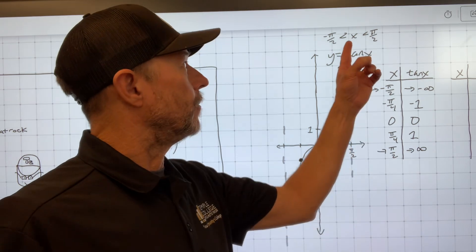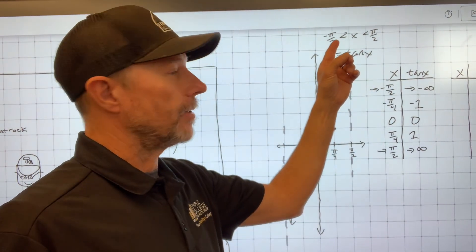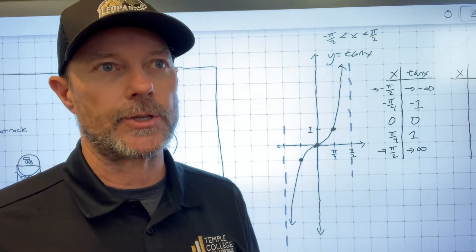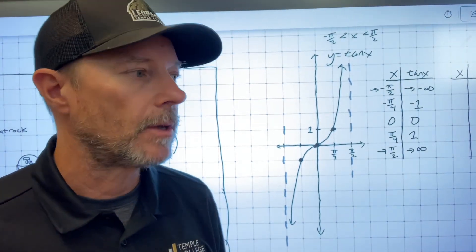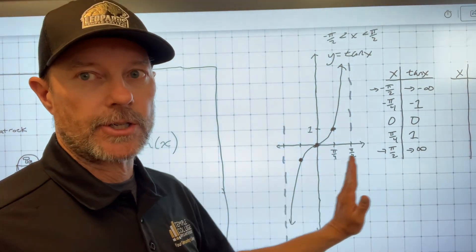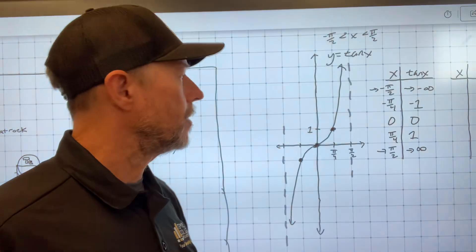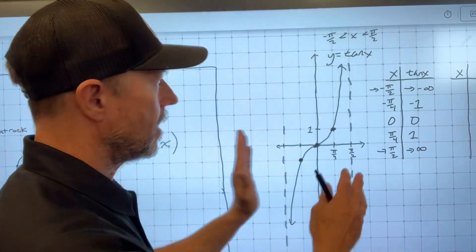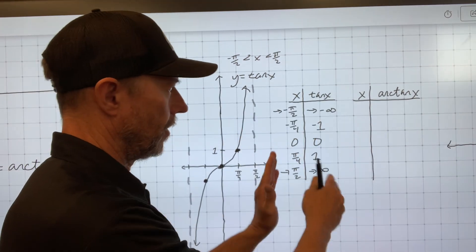For sine, we do the same except it's less than or equal to π/2 or greater than or equal to negative π/2. You graph the original trig function over the domain restriction so that it passes the horizontal line test, and you make a table of values.